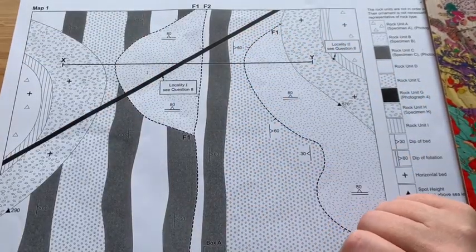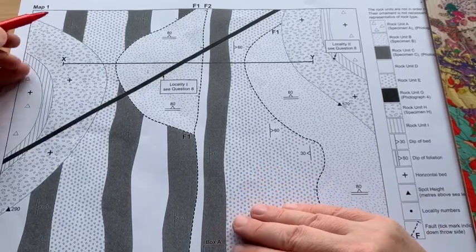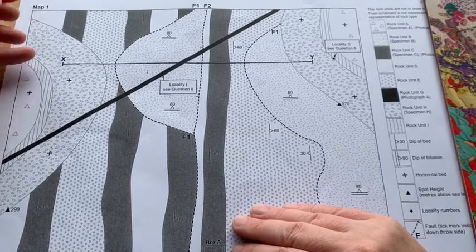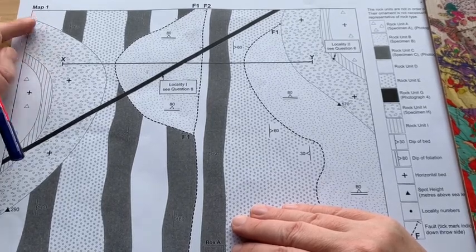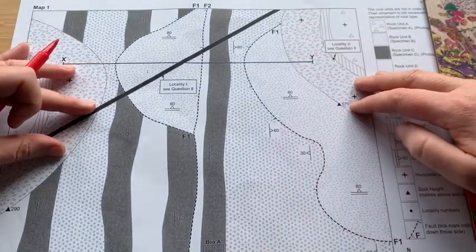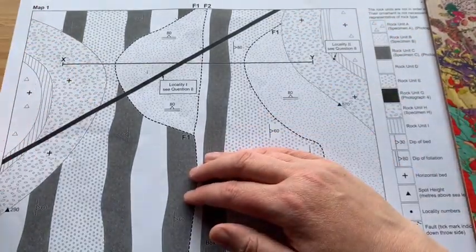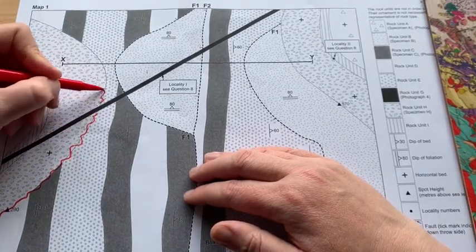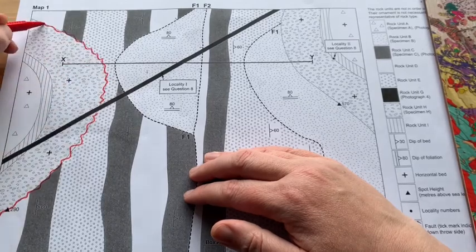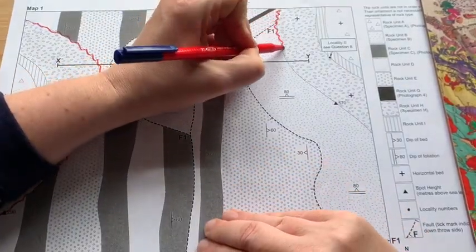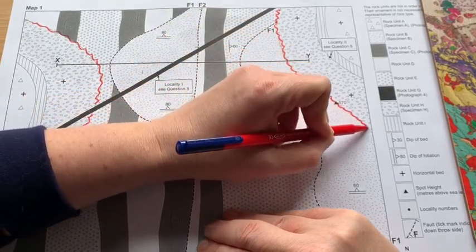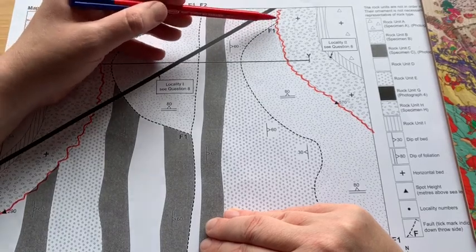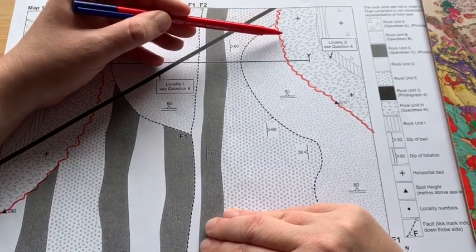Other features that we can see on the map is an unconformity. It is at the base of rock unit H and you can see it on two parts of the map on the western and on the eastern side. And we can see that it truncates across loads of different boundaries. So I'm marking on the unconformity now. And if we look at on the eastern side of the map, we can see that the unconformity is younger than F1 because F1 has been stopped by the unconformity itself.